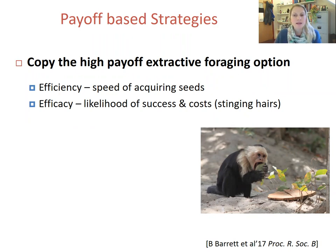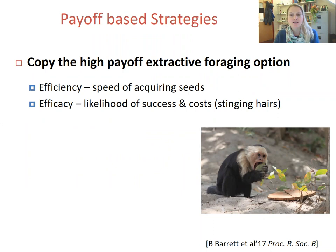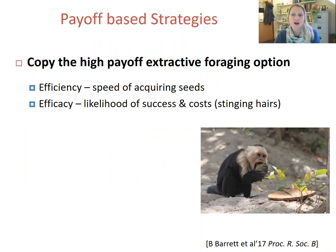The monkeys displayed seven different techniques for dealing with these novel fruits, and they differed in efficiency — the speed of acquiring the seeds — and efficacy — the likelihood of success — and costs such as harm from the stinging hairs. In this photo here, you can see the highest payoff behaviour, which was the use of the canines to bite quite specifically on the seam of the fruit to split it open.